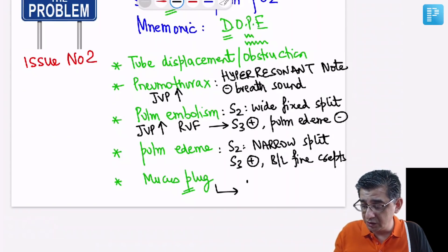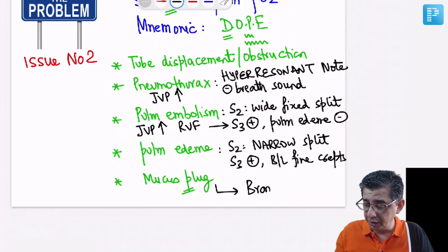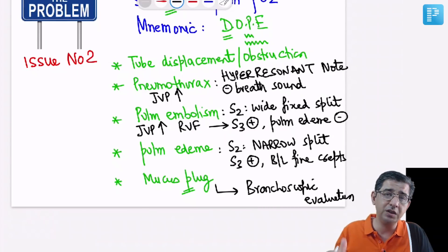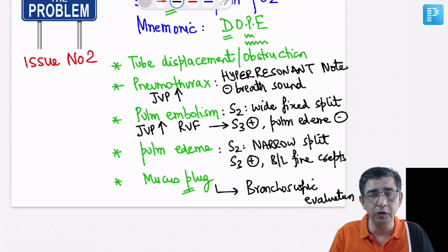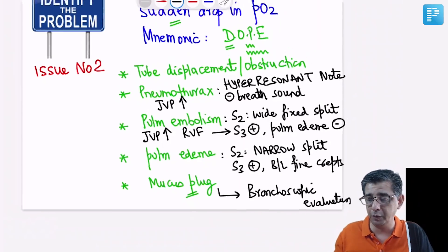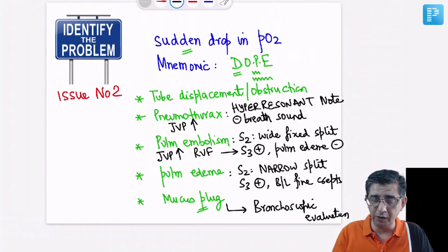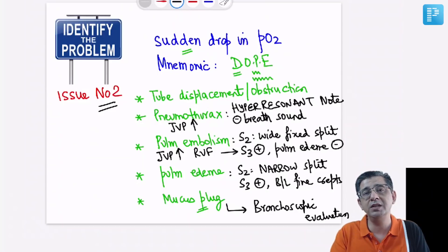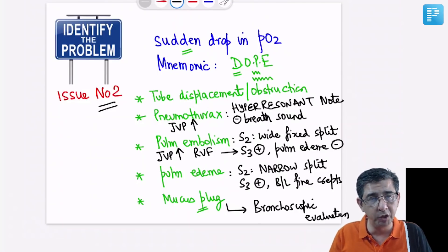If it is a mucus plug, after ruling out all other causes, you schedule the patient for bronchoscopy. This bronchoscopic evaluation not only helps in diagnosis but in the same setting you can also remove the plug, and you will notice that the oxygen saturation of the patient improves. So in summary for issue two, a sudden decrease in PO2 in a ventilated patient: consider the DOPE mnemonic.